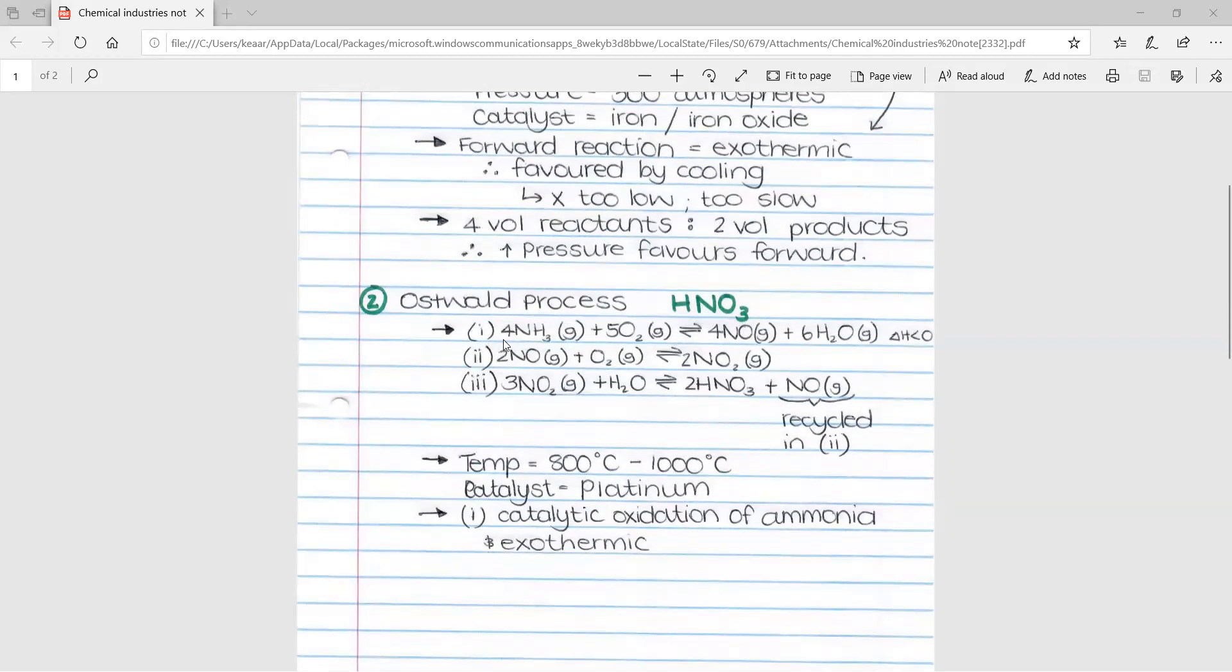The first is 4NH3 plus 5O2 to form 4NO plus 6H2O. Delta H is less than zero. The second would be taking this NO and using it in a new reaction: 2NO plus O2 to form 2NO2. Once again, these are all reversible reactions.